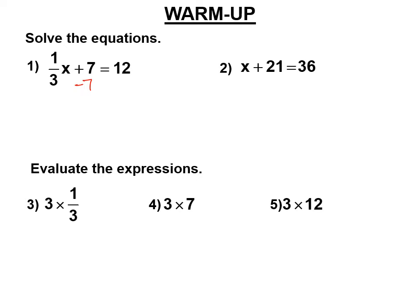When you have a fraction coefficient, step one is still the same. We're going to have one-third x, and this is 12 minus 7. We subtracted 7 from both sides, multiplied by the reciprocal on both sides, and you get x equals 15.